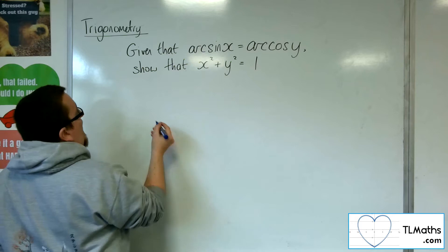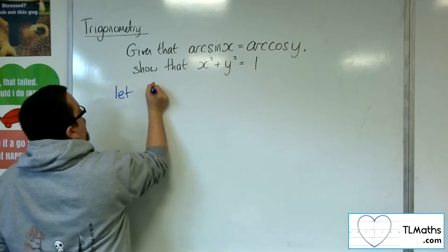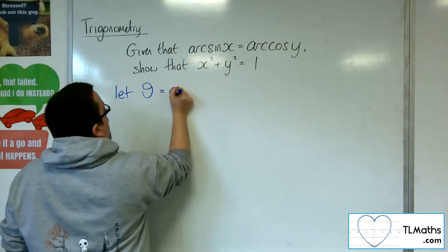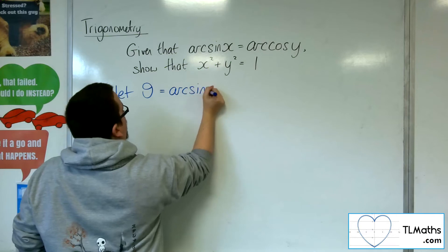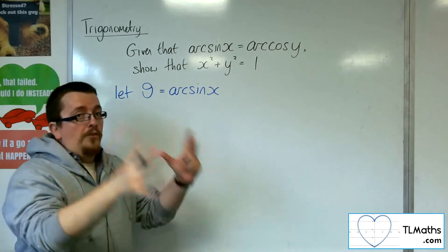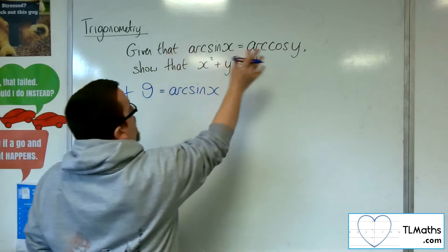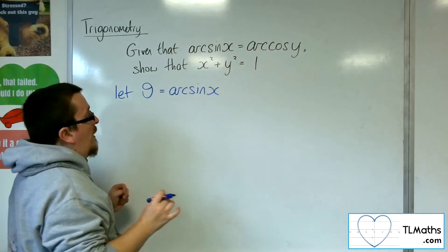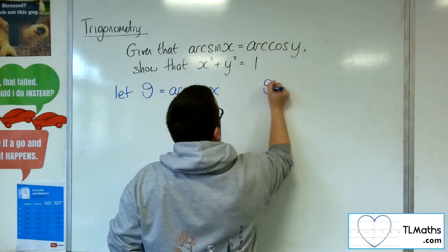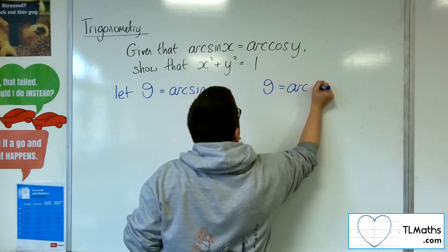So we're going to let θ be the arcsin x. And consequently, if we've let θ be arcsin x and arcsin x equals arccos y, then θ must also be arccos y.